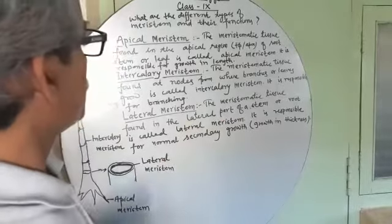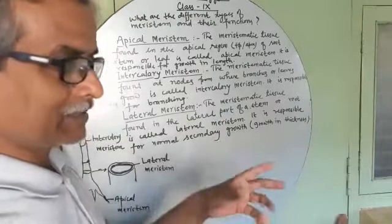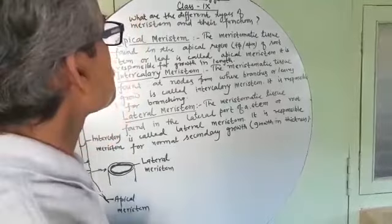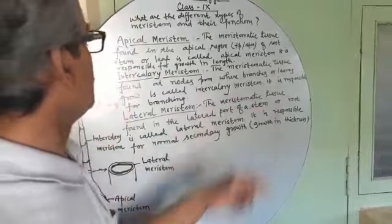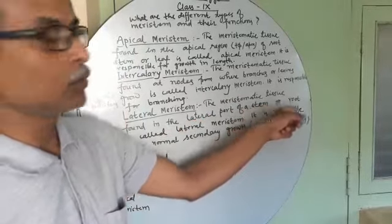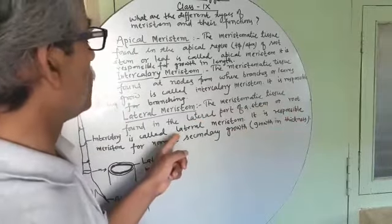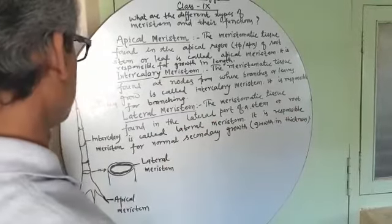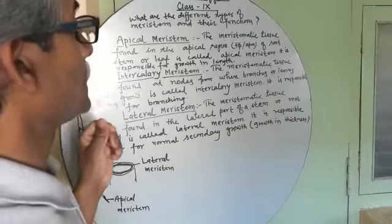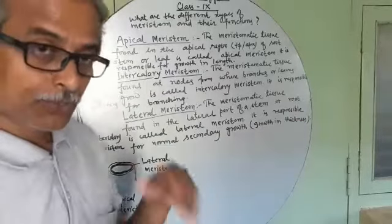So the thickness of the stem or branch or root increases. The meristematic tissue found in the lateral part of a stem or root is called lateral meristem, responsible for normal secondary growth, that is growth in thickness.